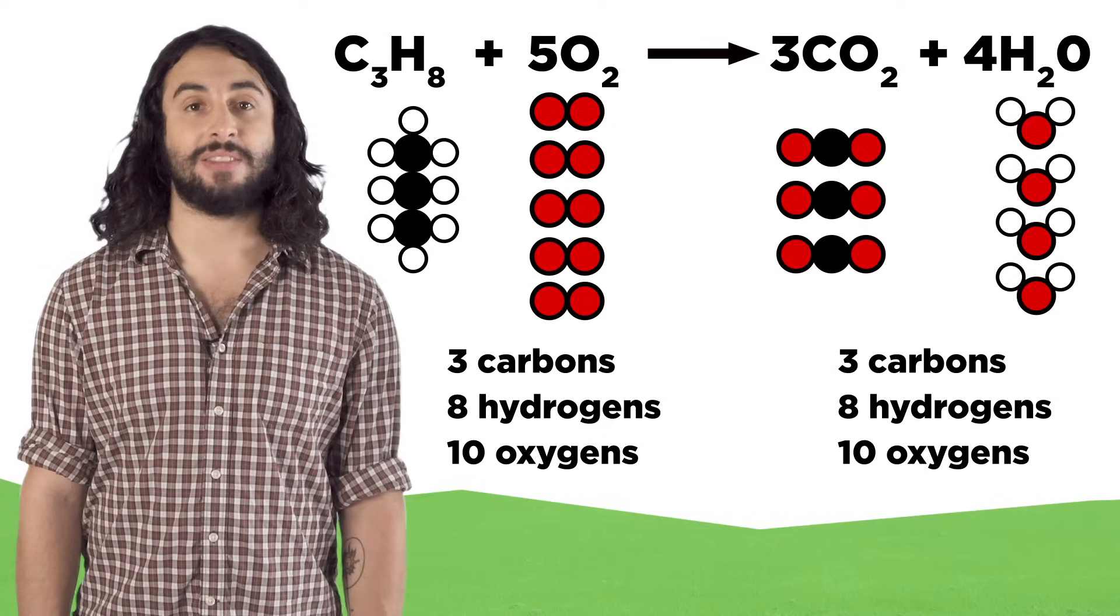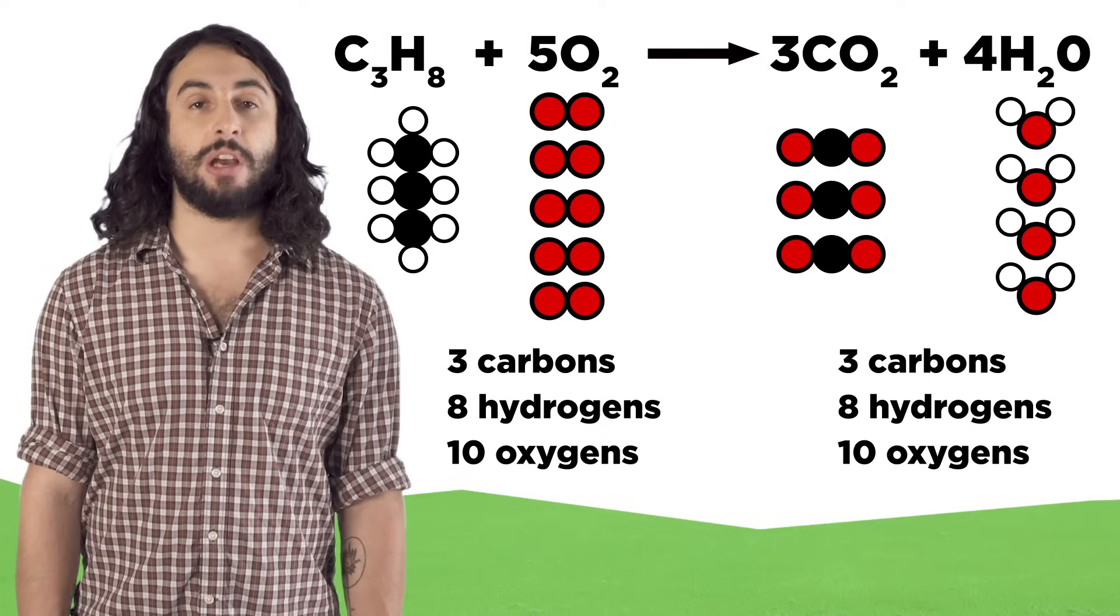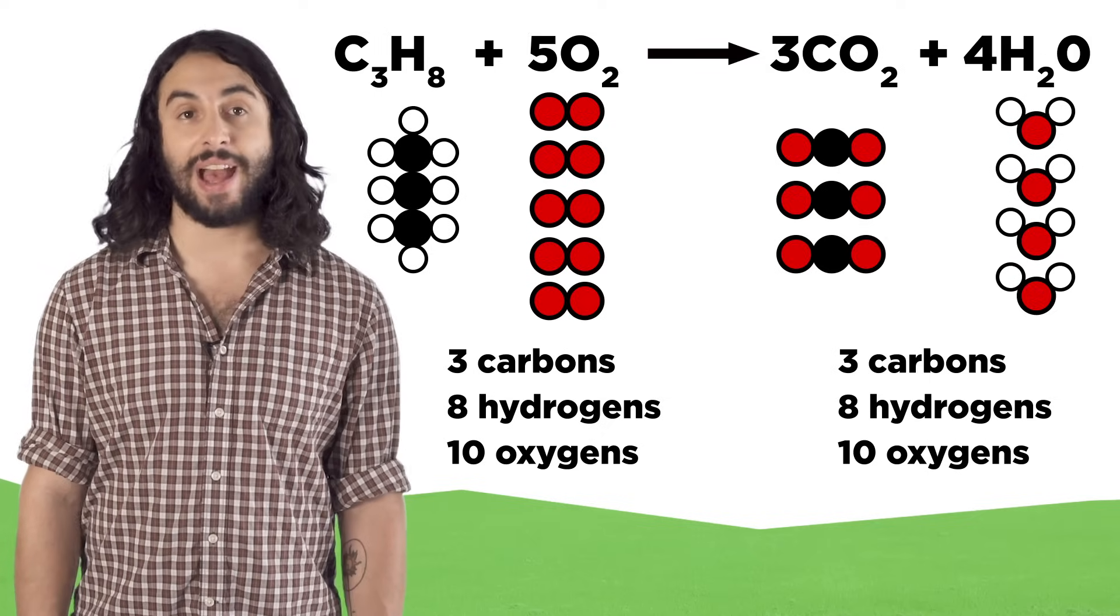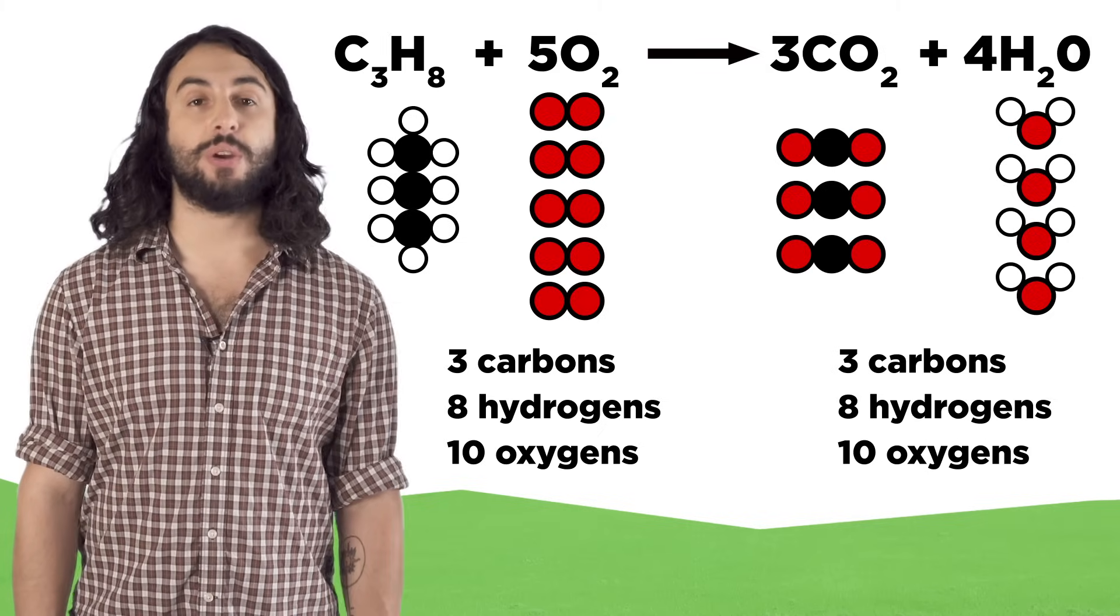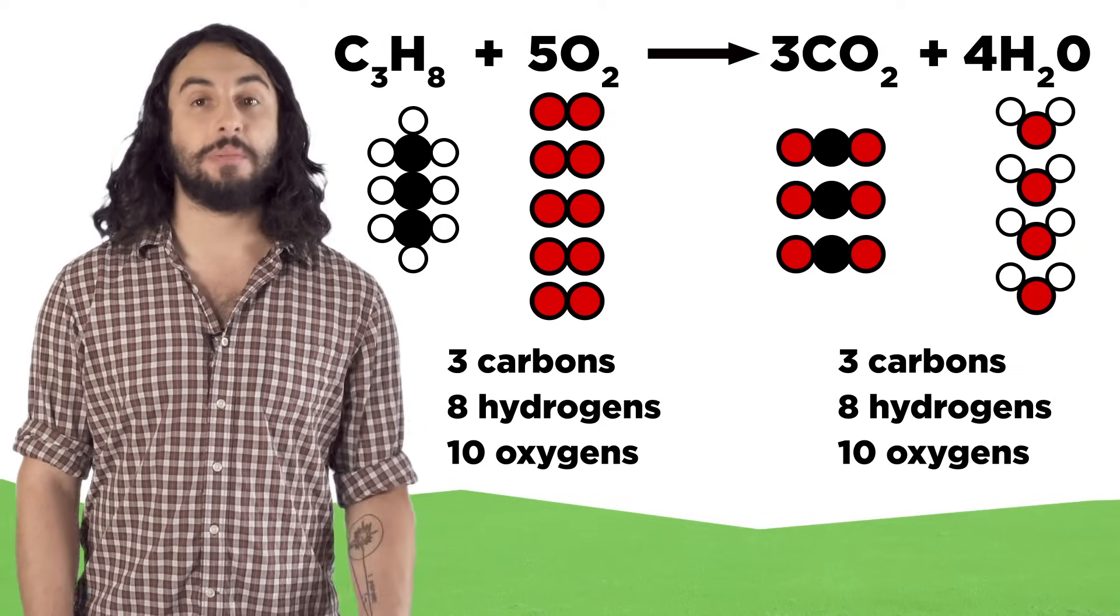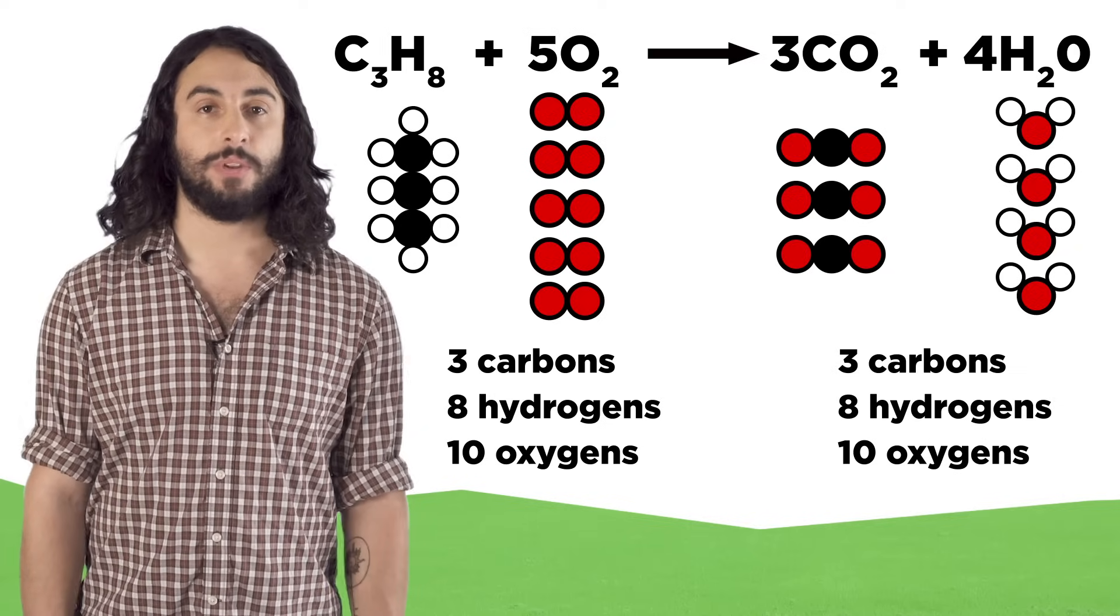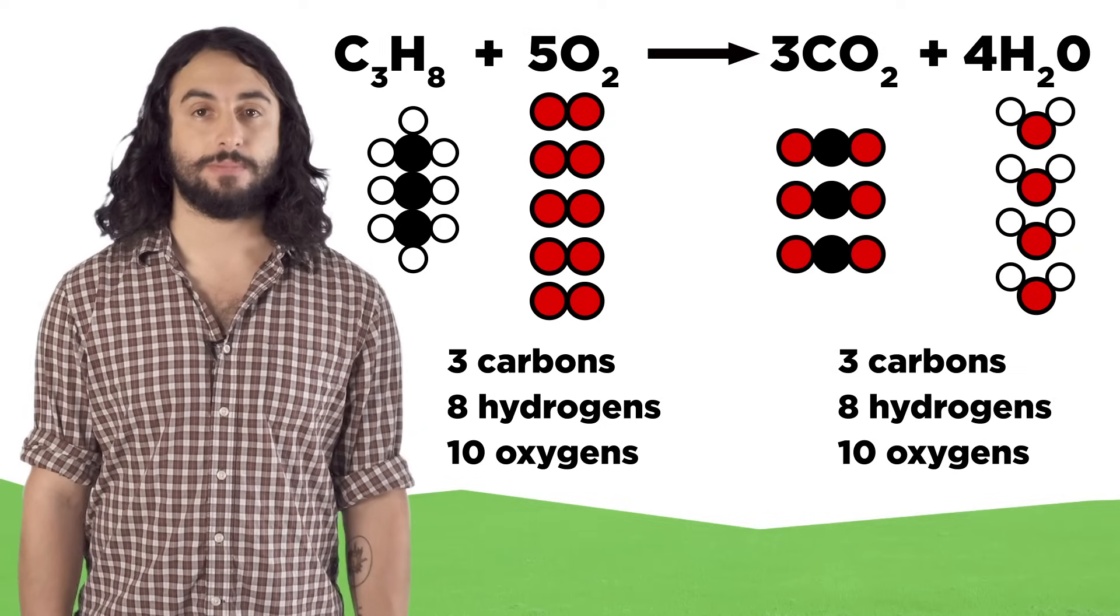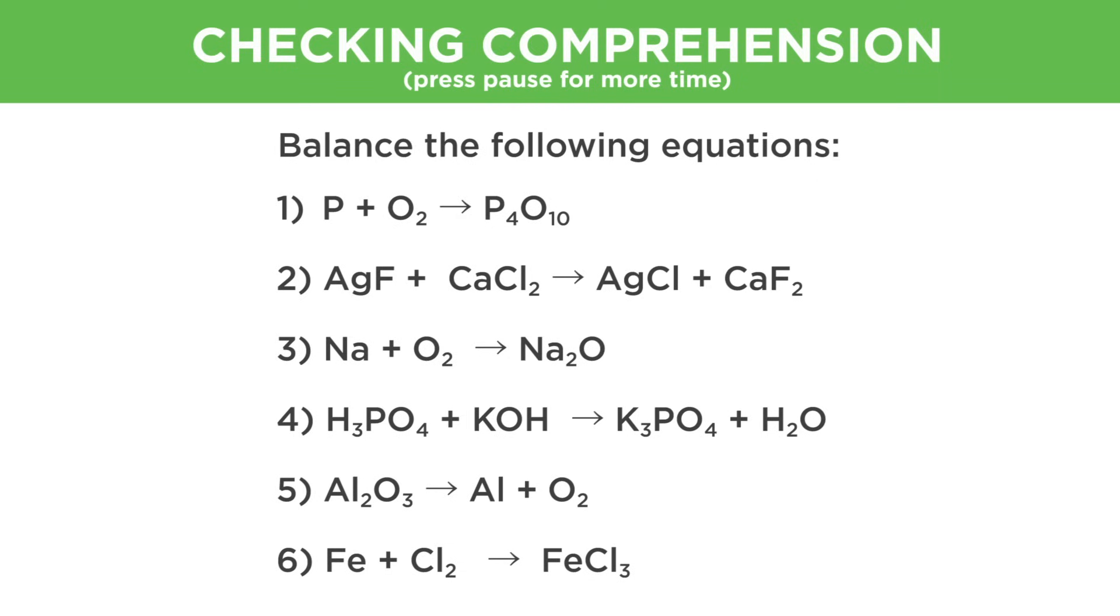Now the equation is balanced. There is the same number of each type of atom on both sides, showing us the correct ratio in which these molecules will have to react. These coefficients are going to be very important as we move forward, as we will have to be able to balance equations to make predictions about chemistry. Let's check comprehension.